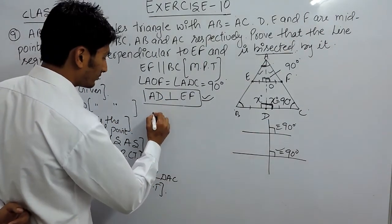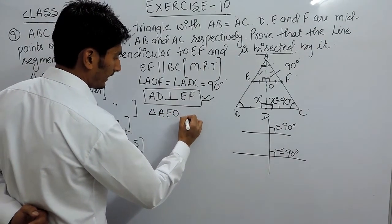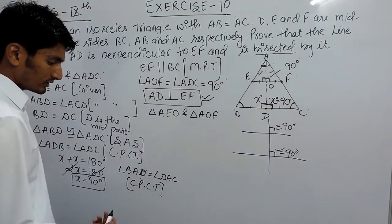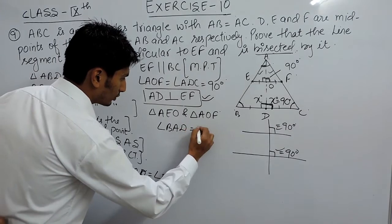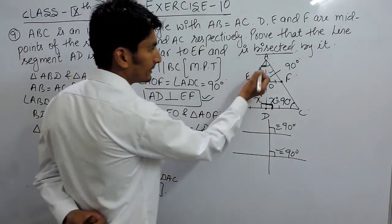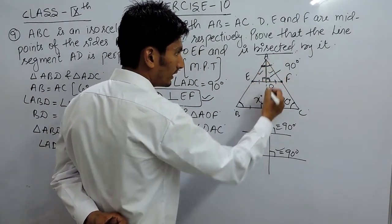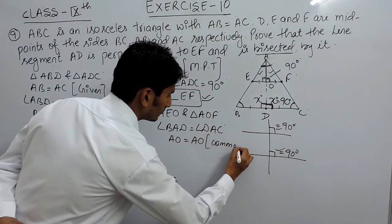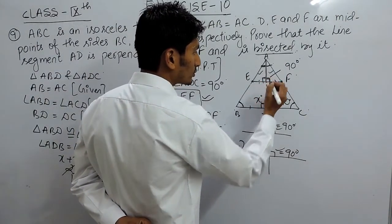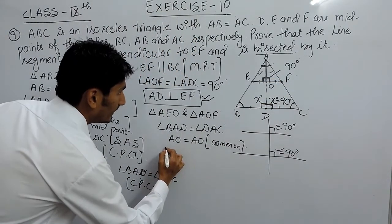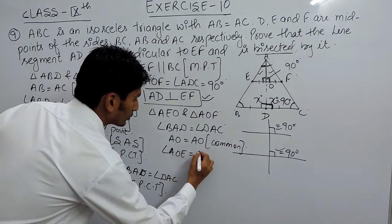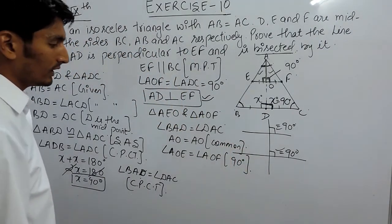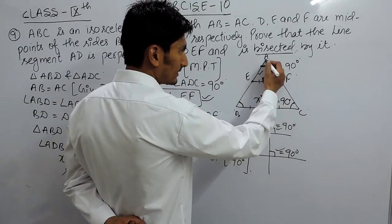Now let's prove triangle AEO and triangle AOF are congruent. First, angle BAD equals angle DAC — this angle equals this angle. Second, AO is common to both triangles, so AO equals AO. Third, both angles AOE and AOF are 90 degrees, as we proved. So angle AOE equals angle AOF, both being right angles.